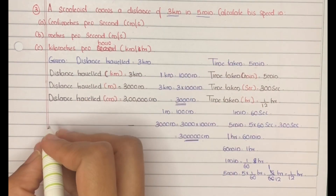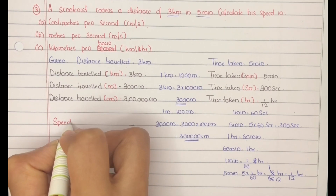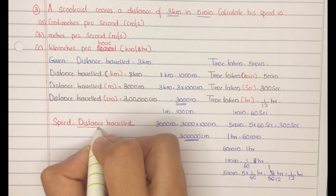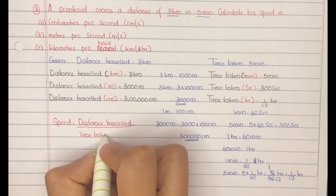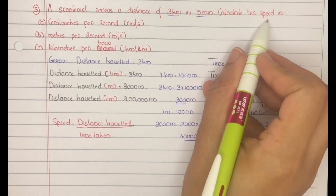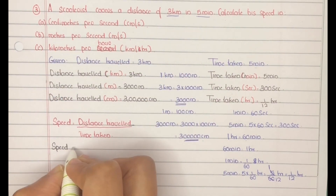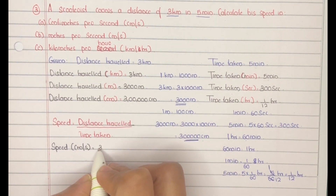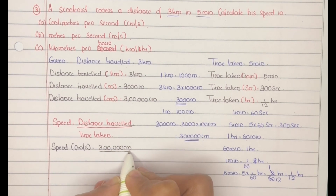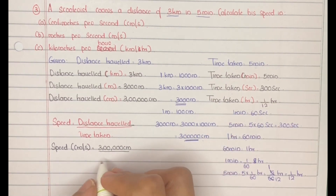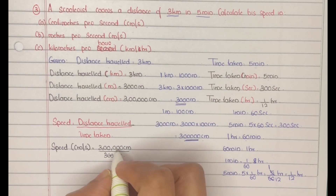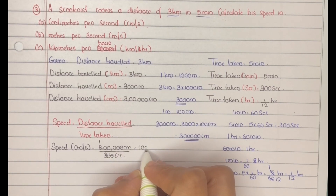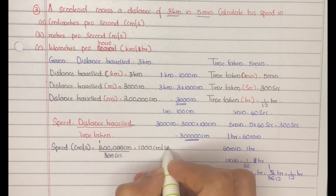Speed is equal to distance traveled divided by time taken. Part A: speed in centimeters per second equals distance traveled in centimeters divided by time taken in seconds, that is 3,00,000 by 300 seconds. Canceling the common terms — three zeros cancel — giving us 1000 centimeters per second.